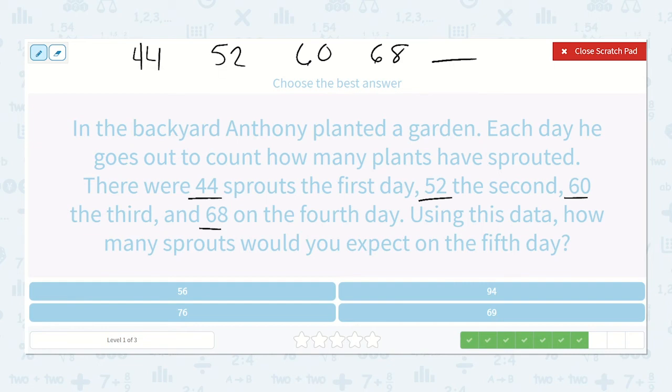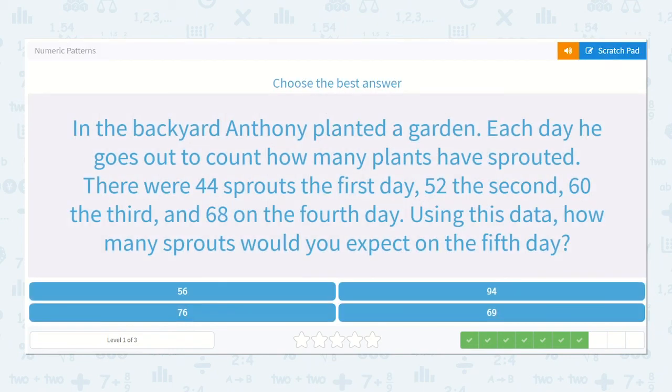So 44 to 52, well I know 44 to 50 is 6, and then 2 more. That would be 8, so plus 8. 52 plus 8 is definitely 60. 60 plus 8 is definitely 68. Now we have 68 plus 8 is 76. So our answer is 76.